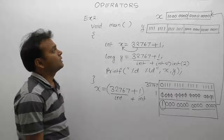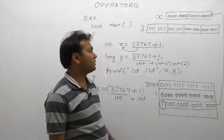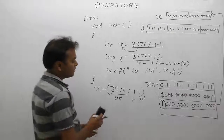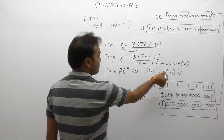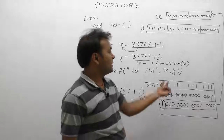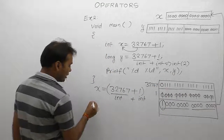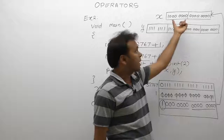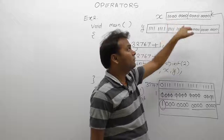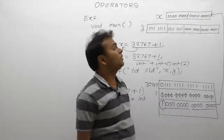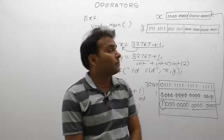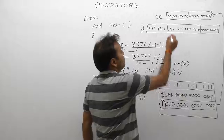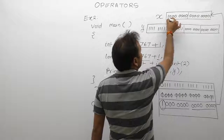This is the memory representation of x and y after solving the expressions. Next, we use printf to display the values of x and y. To output the values, we need to convert binary to decimal. Binary-to-decimal conversion: check the previous video on how to convert binary to decimal and decimal to binary.